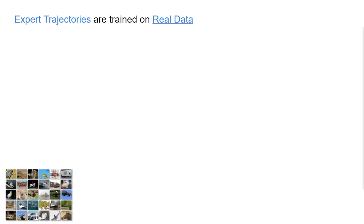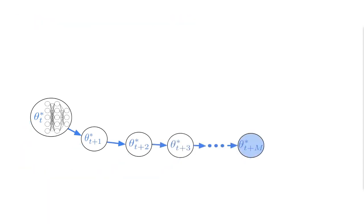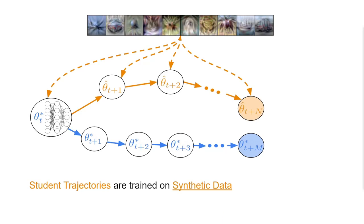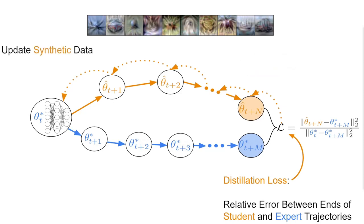In our new method, we distill our synthetic data by matching expert training trajectories. These expert trajectories are first trained on real data. We then initialize a student model at a sampled time step t along the expert trajectory and train for many iterations on the synthetic data. Our distillation loss is then computed as the relative error in parameter space between the end of the student trajectory and a future point along the expert trajectory. This distillation loss is then backpropagated through all the student updates and used to update our synthetic images.